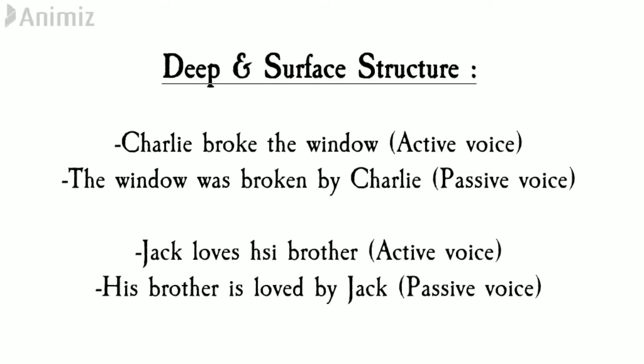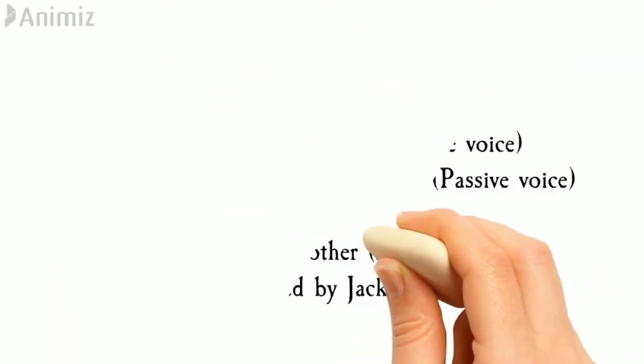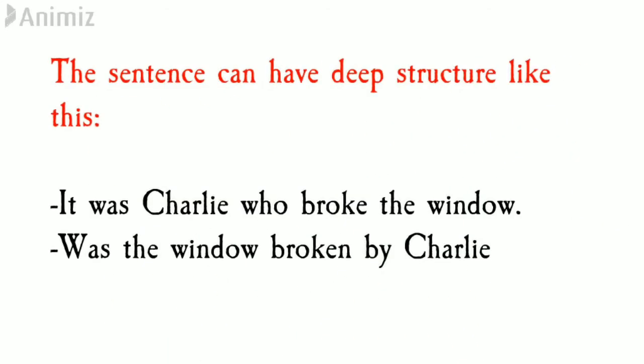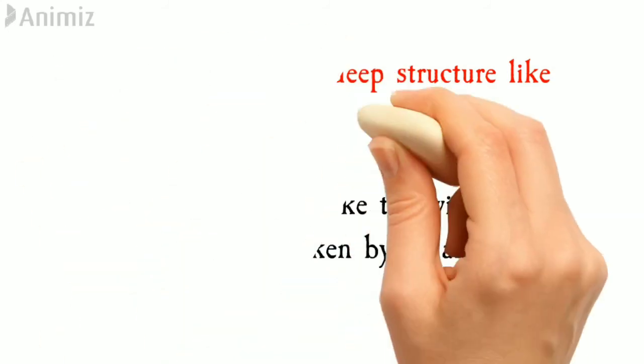For the sentences 'It was Charlie who broke the window' and 'Was the window broken by Charlie?' — an abstract level of structural organization in which all the elements determining structural interpretation are represented is called deep structure. In other words, the underlying level where the basic components can be represented is called deep structure.